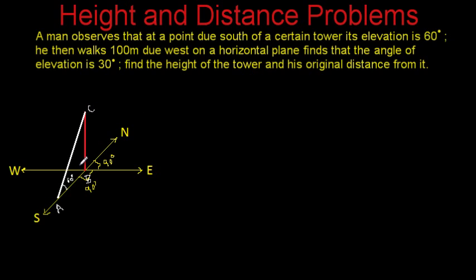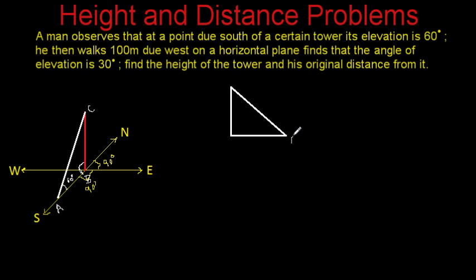This angle will be 90 degrees, so we have actually got a right angle triangle where this is point A, this is point B, and this is point C. This angle is 60 degrees and this angle is 90 degrees, because the tower is perpendicular and line BC represents the tower.